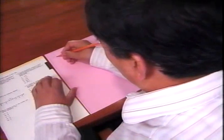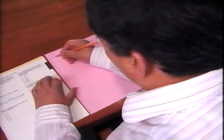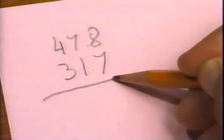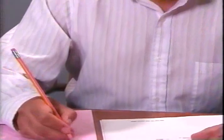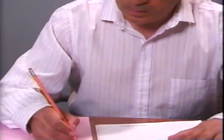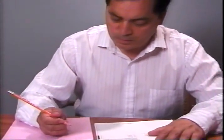If we subtract 31.7 centimeters from 47.8 centimeters, the result is 16.1 centimeters. The plant grew 16.1 centimeters during the week. So we need to enter 16.1 into the proper standard grid for that problem on the answer sheet.